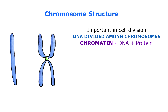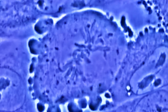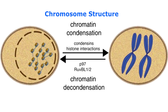We see various changes to chromosomes throughout the cell cycle because they could either be condensed or uncondensed. With uncondensed chromosomes they're long and thin strands and you can't see them under a light microscope, whereas with condensed chromosomes you can actually see them under a light microscope.